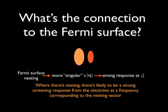The connection with the Fermi surface is through the effect its shape, or more specifically its nesting properties, have on the generalized susceptibility which describes the screening response of the electrons. Nesting means more singular chi, thus a strong coupling between the electron and phonon systems at the nesting vector, potentially giving rise to anomalies in the phonon spectra.